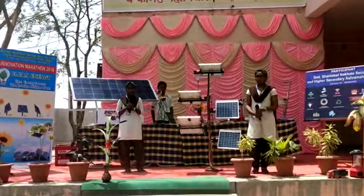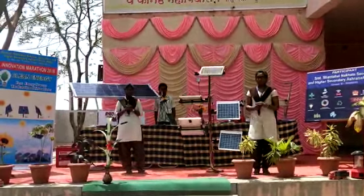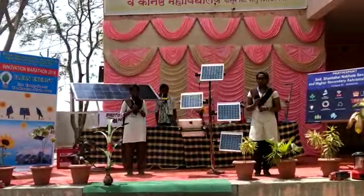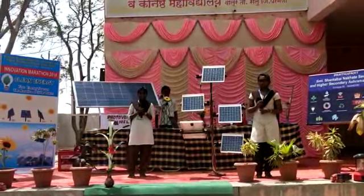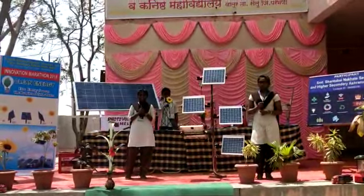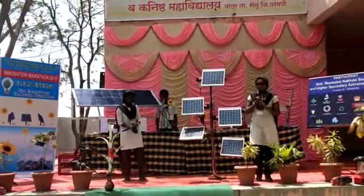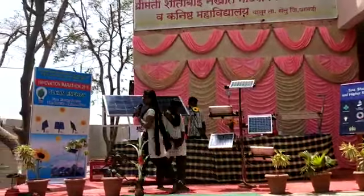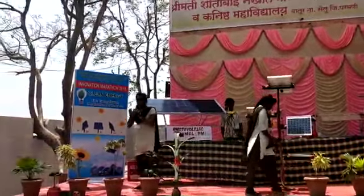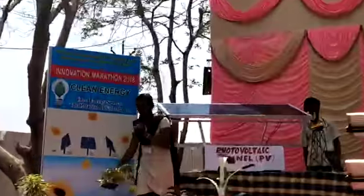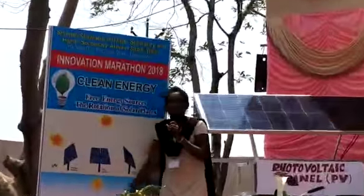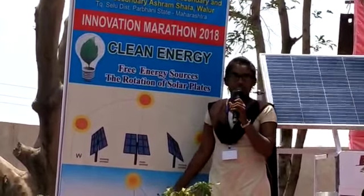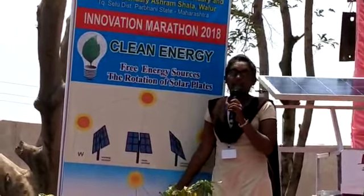Hence, with a minimum number of solar plates, we can produce a larger amount of energy than the fixed one. The energy output from a PV panel is based on the angle between the sun and the PV panel. The angle at which the sun hits the PV panel determines its energy generation.